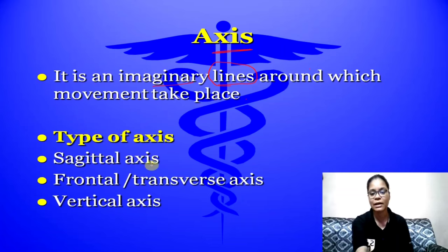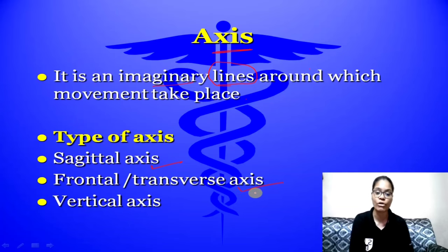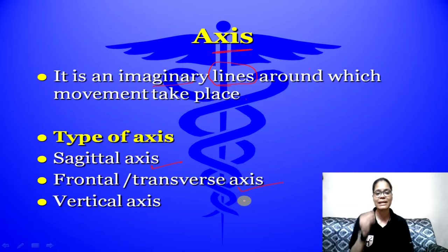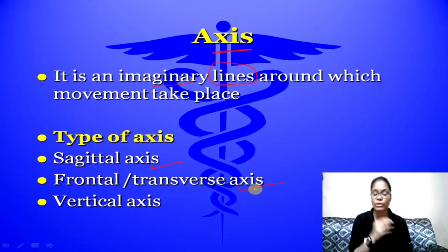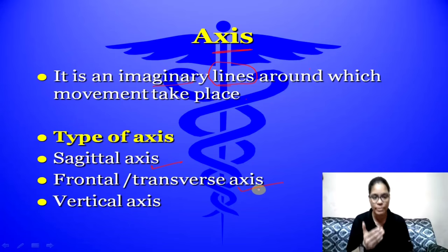If you talk about the types of axis, there are three types. Number one is the Sagittal axis. Number two is the Frontal axis — this is also called the Transverse axis. This is very important: there are two synonyms for one word, so if you see Frontal, it is also called Transverse axis. Number three is the Vertical axis. These are the three axes.